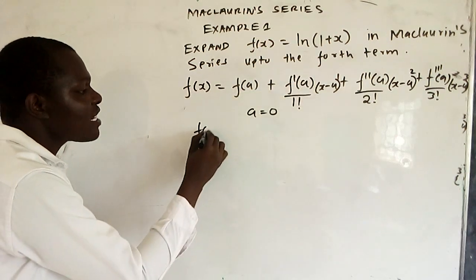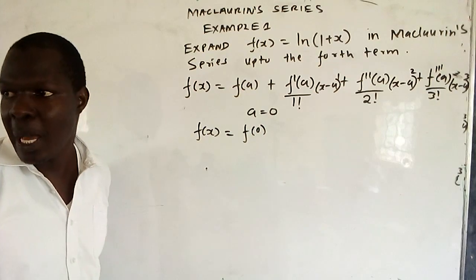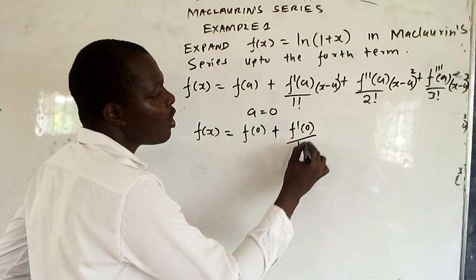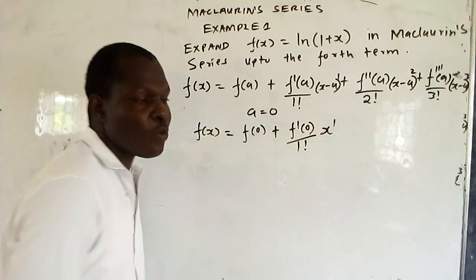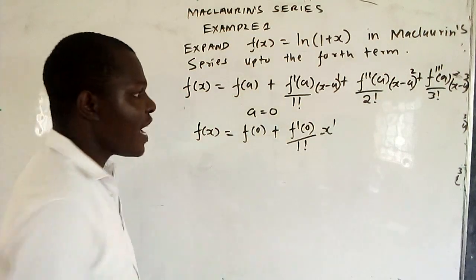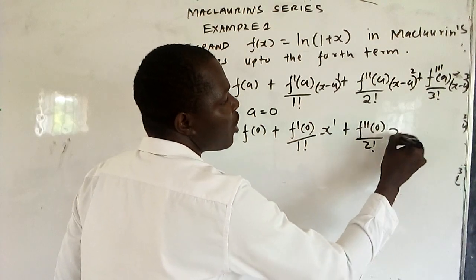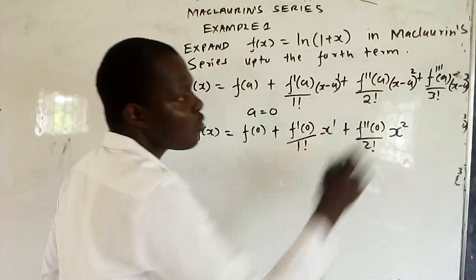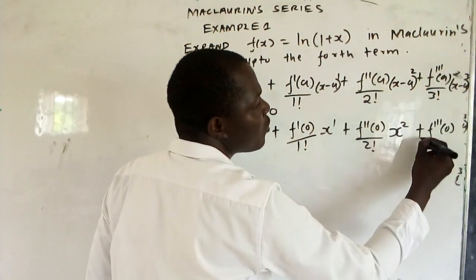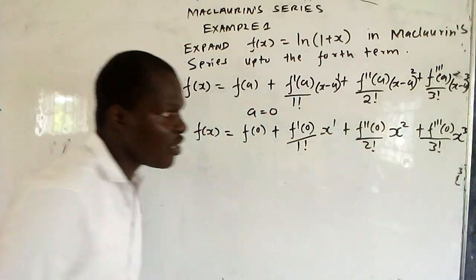Where there is an 'a', you put zero. So you get f(x) = f(0), plus f'(0) over 1 factorial, then x raised to power 1 — because a is zero, so you just remain with x inside the bracket. Then plus f''(0) over 2 factorial, then x raised to power 2. Then plus f'''(0) over 3 factorial, then x raised to power 3.